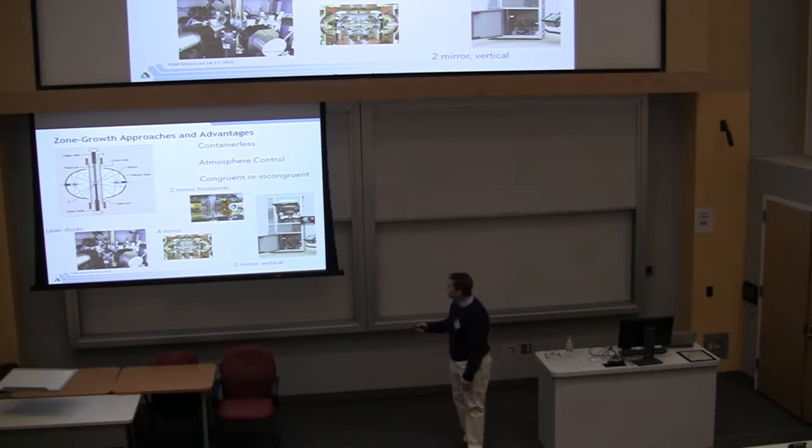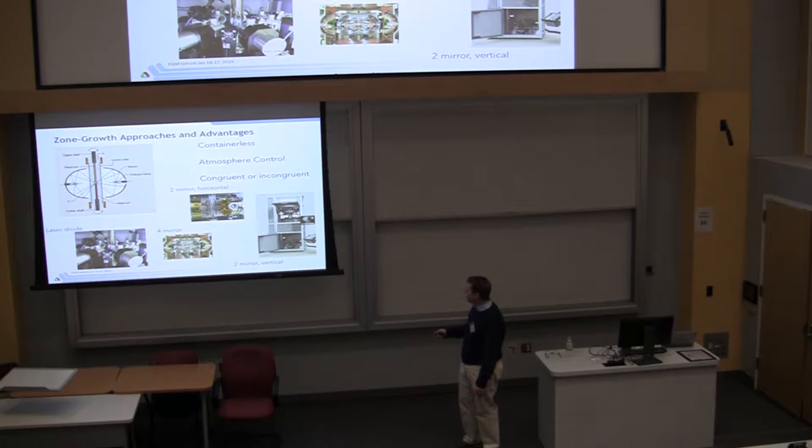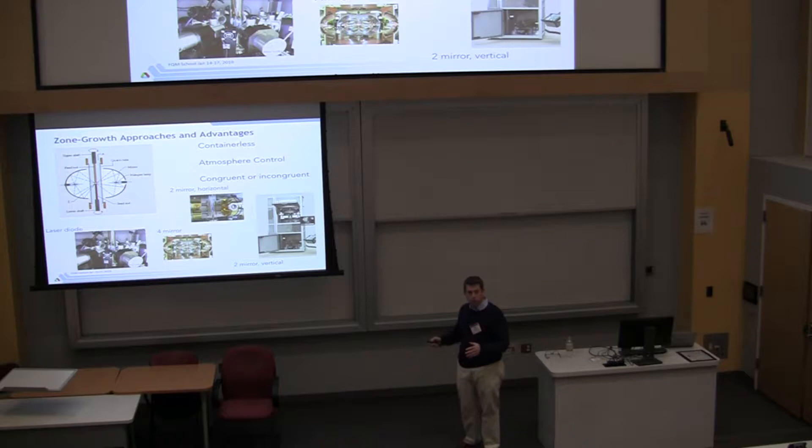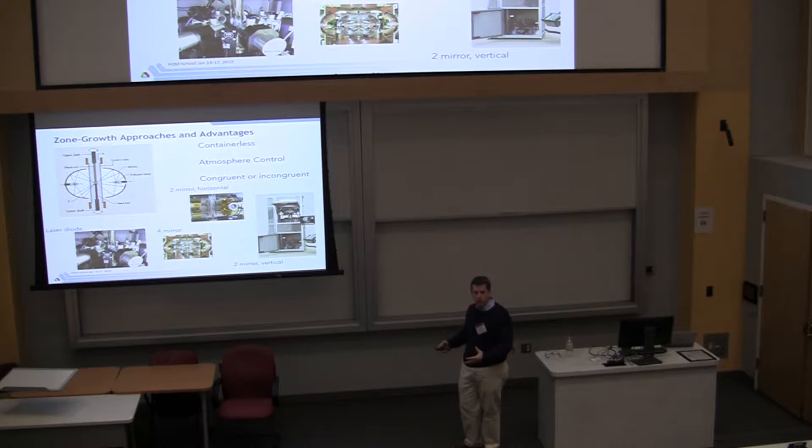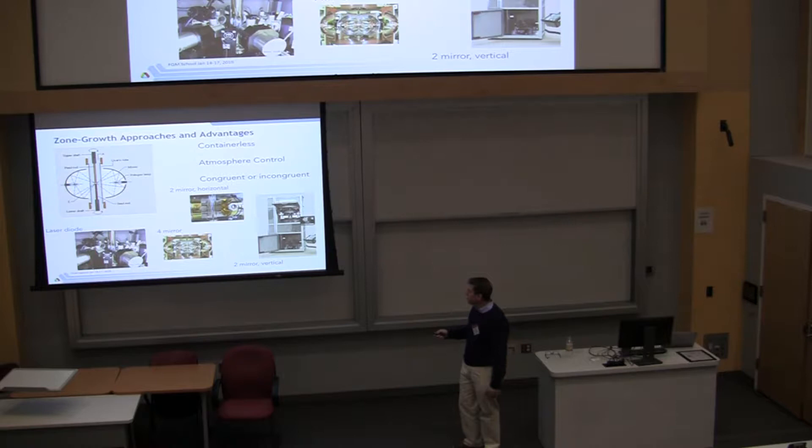And really that's kind of the message of why this floating zone technique has been so impactful in the area of condensed matter, and in particular in complex oxide, transition metal oxide physics. Because of this insatiable neutron scatterer, right? So these neutron scatterers, they're never satisfied because the neutron has a rather poor cross-section, unlike x-rays, and so you need a lot of mass to be able to get a big signal.